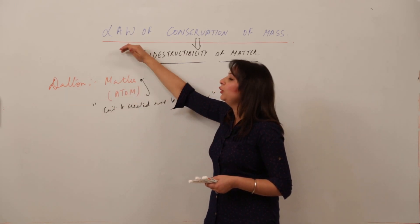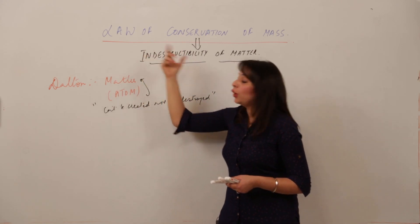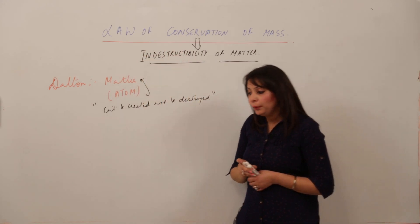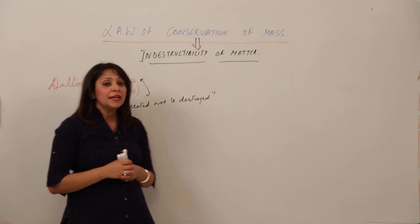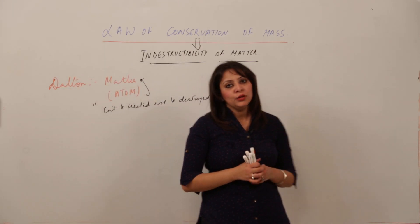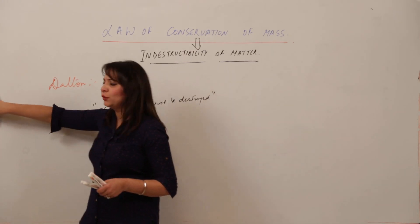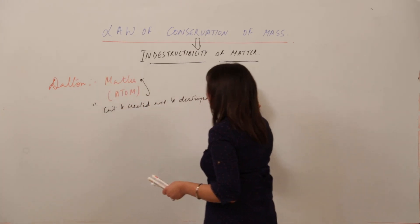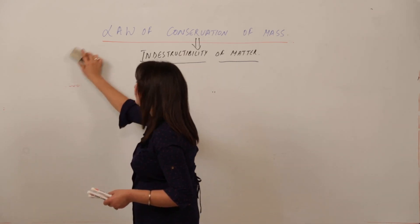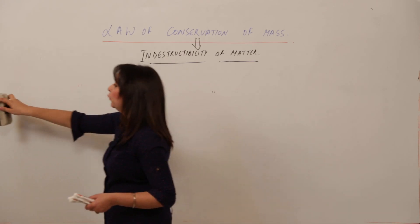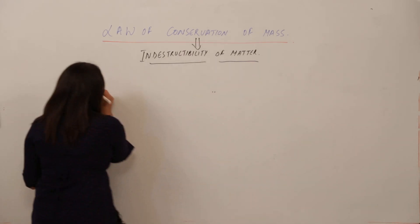This leads to the formulation of the Law of Conservation of Mass. This law is obeyed by chemical reactions. Now the question is: what exactly is a chemical reaction? Before we take up the law of conservation of mass, I want you to know what a chemical reaction actually is.